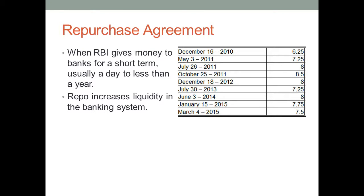Repo means a repurchase agreement. What happens here is that banks want to borrow money from RBI because RBI offers money at an inexpensive rate compared to the bank borrowing money from the public. Here, the bank is the buyer or rather the borrower of funds, and RBI is the seller or rather the lender of funds. The bank borrowing the money can pay it back within a day or within a short period of time, usually less than a year. Why would RBI give money to a bank? Because it wants to earn returns on the cash it has.